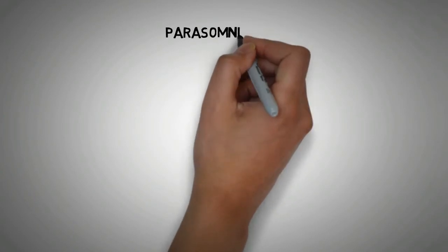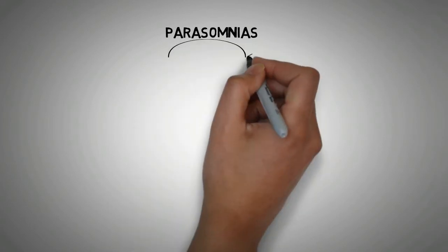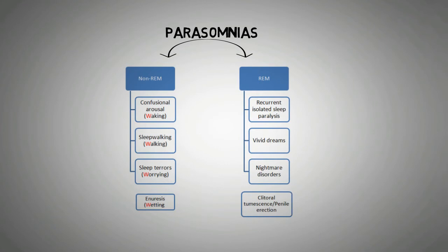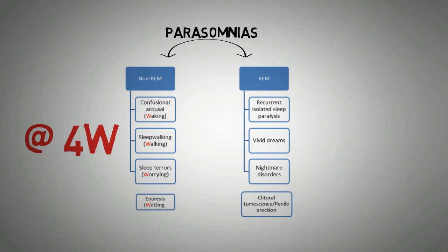In this video, we'll talk about the parasomnias which occur during REM sleep and non-REM sleep, and we'll also discuss easy mnemonics to remember them. As shown in the picture below, parasomnias that occur during non-REM sleep are confusional arousal, sleepwalking, sleep terrors, and one important behavior also seen during non-REM is enuresis. The mnemonic to remember them is 4W: walking, waking, worrying, and waiting.